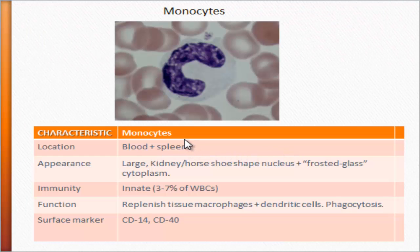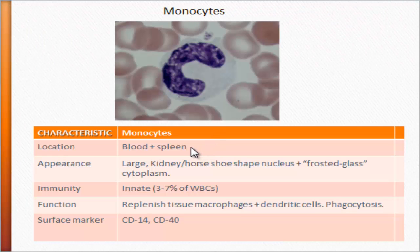The specific area where these monocytes remain in the spleen is the cords of Bilroth, which is just a fancy name for the red pulp cords. There will be a video on the spleen as well, since it's one of the lymphoid organs with a lot of important functions regarding our immune system. For now, just remember that your monocytes stay as a reservoir in your cords of Bilroth.